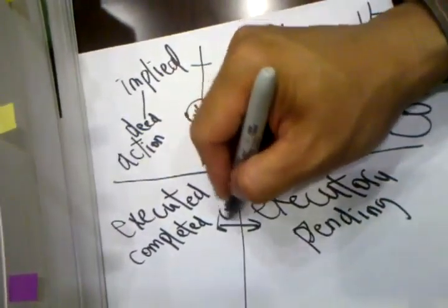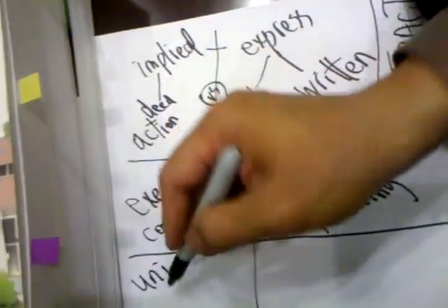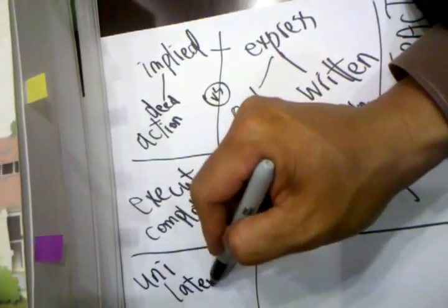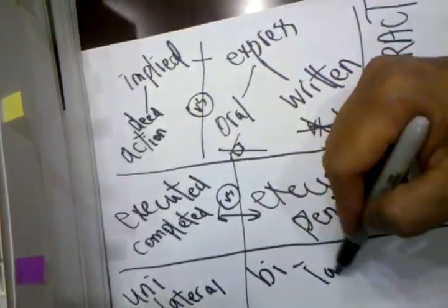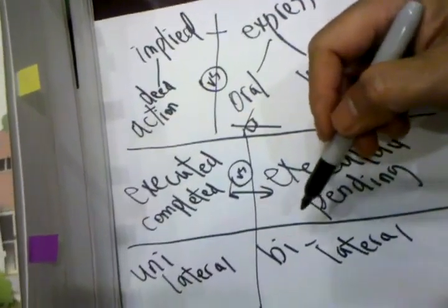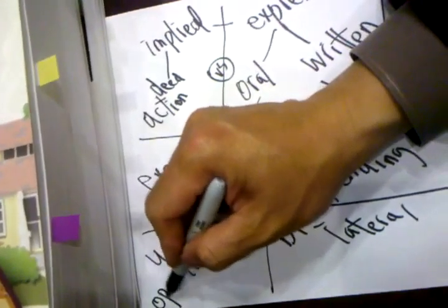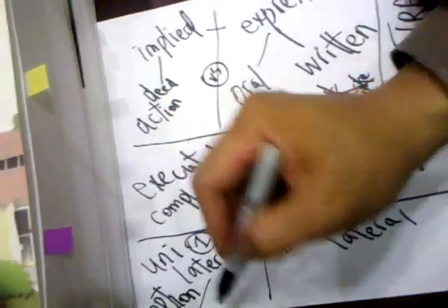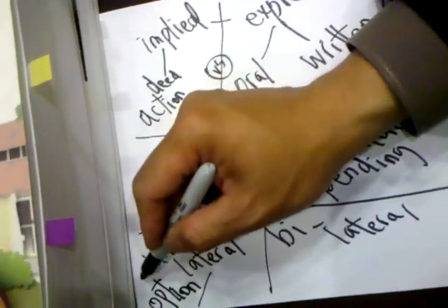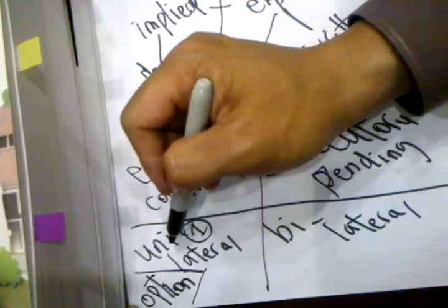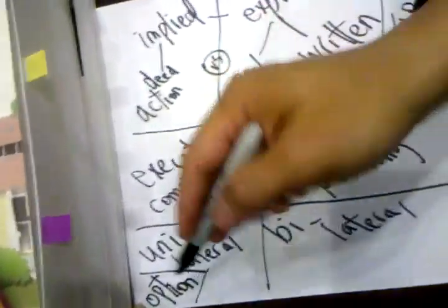And last but not least, it is called unilateral and also bilateral. What does it mean? One direction, two directions. Very good. This is one and unilateral we need to remember is option. Most of the time, answer if it is option and offer, then it is option.